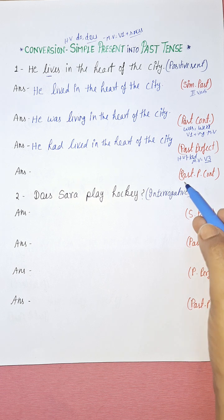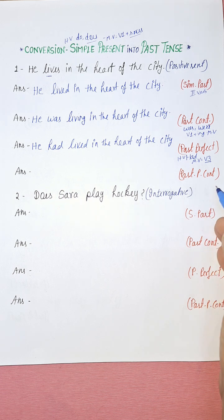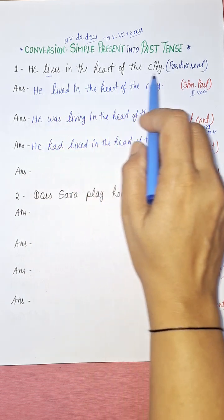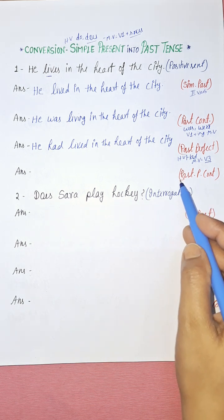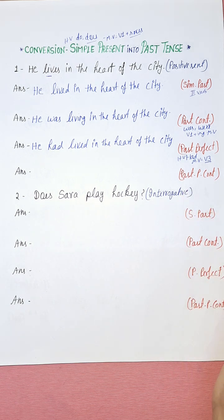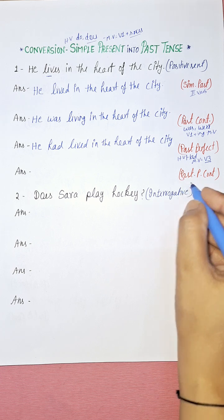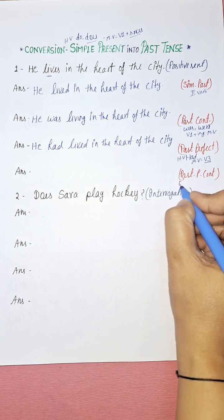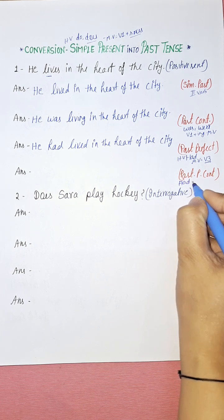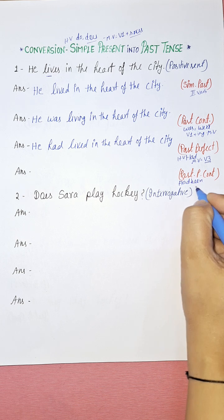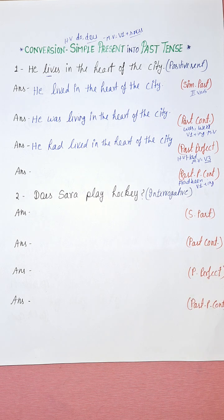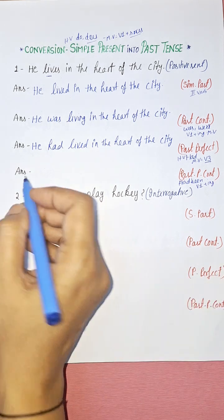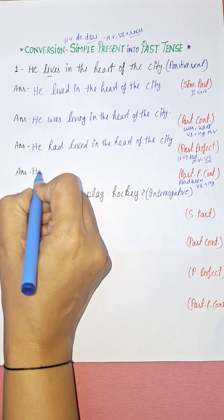Now convert into past perfect continuous tense, also known as past perfect progressive tense. Its helping verb is 'had been', and as a main verb we use the present participle form — V1 plus -ing.